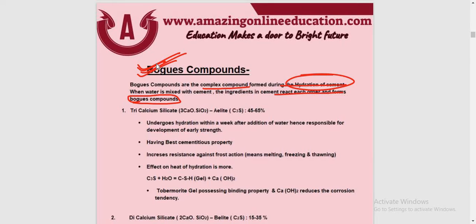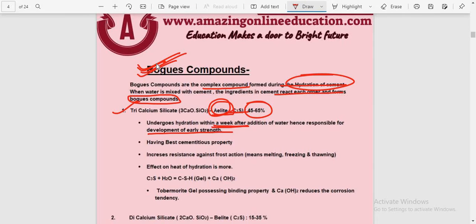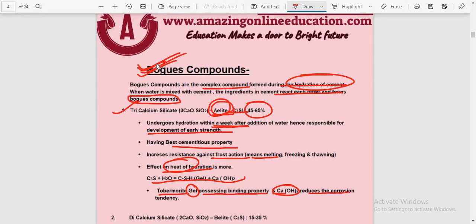The first Bogue compound is Tricalcium Silicate, called C3S or alite, comprising 45 to 65%. It undergoes hydration within one week after addition of water, and hence is responsible for the development of early strength. It has the best cementitious property, increases resistance against frost action — meaning freezing and thawing — and the effect of heat of hydration is more. The reaction produces Tobermorite gel (C-S-H gel) possessing binding property, and Ca(OH)2 which reduces the corrosion tendency.